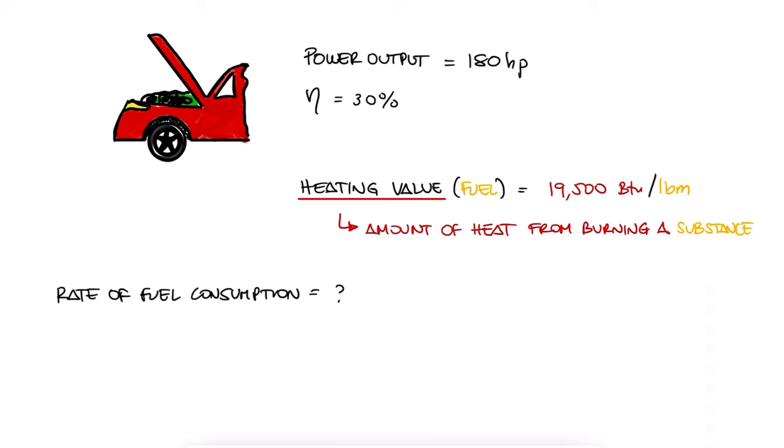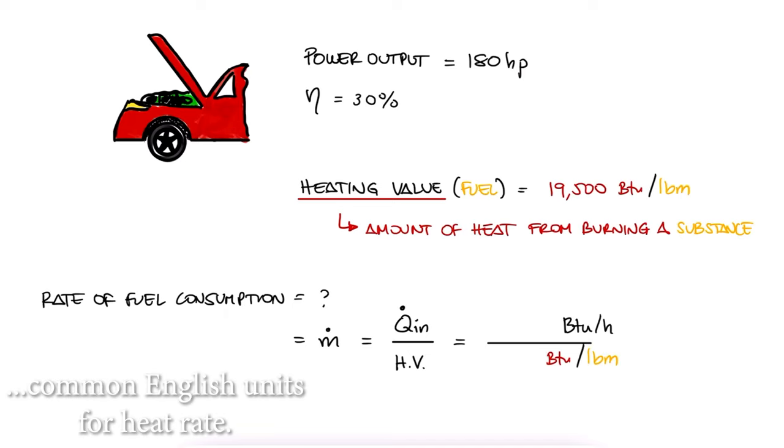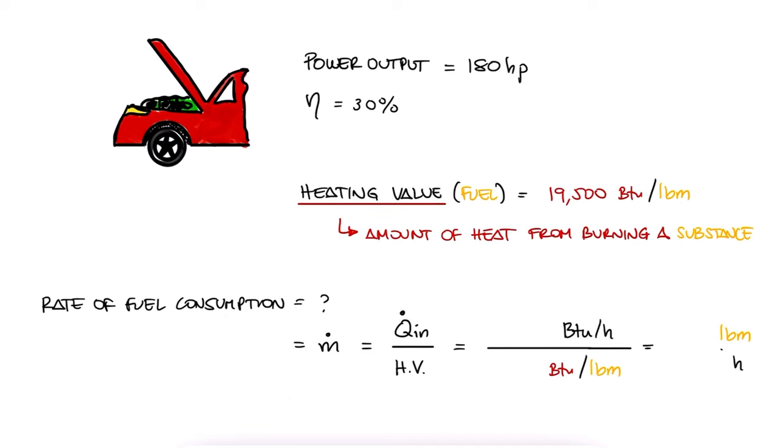This means that the rate of fuel consumption will be equal to the rate of heat that the car needs over the heating value. If the rate of heat is in BTU per hour, then this mass rate is in pounds per hour, which are indeed the units for mass flow rate.